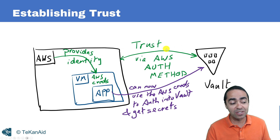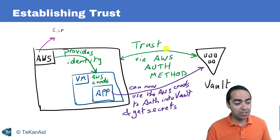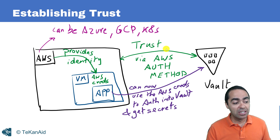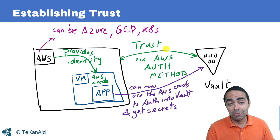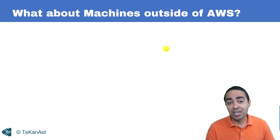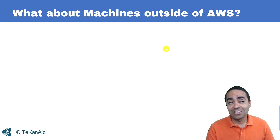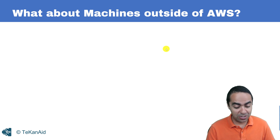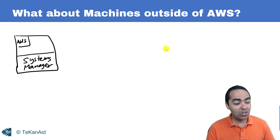This is seamless because of the trust established between AWS and Vault. But some platforms don't provide identity to their resources — VMware vSphere, for example, doesn't provide an identity to a VM it spins up. So what happens when you have a machine living outside of AWS, such as a VM in vSphere running in your on-premises data center? How can you establish trust or get an identity into that VM so it can authenticate via AWS into Vault?